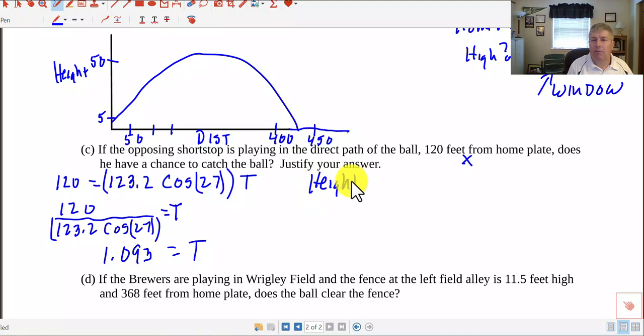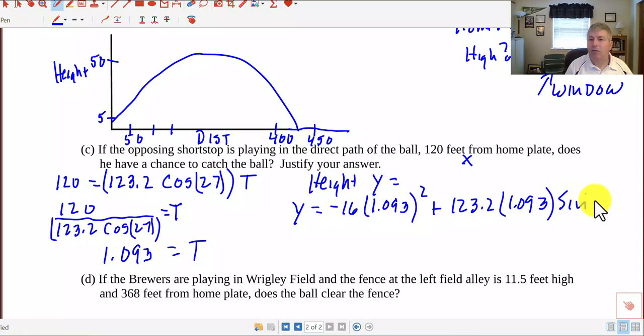So we know at 1.093 seconds, it's going to be hit a distance of 120 feet, but we want to know how high it is. So the height is going to be the Y equation. So we'll use Y equals, and I'll give myself a little bit more room, negative 16 times 1.093, that's T squared, plus 123.2 times 1.093, which is T, sine of 27, plus 4. So now I've put my time into my Y equation, because my Y equation gives me the height, and I get Y equals, once I put all that in my calculator, 46.018 feet. That would be pretty ambitious for our shortstop. So I would say no, he's not going to catch the ball.